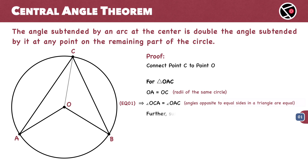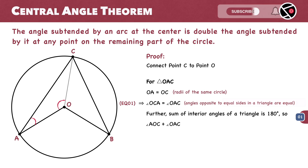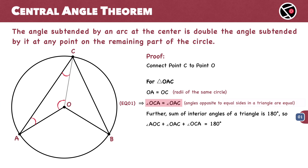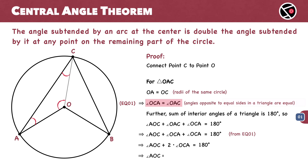We also know that the sum of interior angles of a triangle is 180 degrees. So for triangle OAC, angle AOC plus angle OAC plus angle OCA equals 180 degrees. Using equation 1, we substitute angle OAC with angle OCA, giving us angle AOC plus 2 times angle OCA equals 180 degrees, or angle AOC equals 180 degrees minus 2 times angle OCA. This is equation number 2.